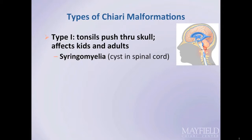Chiari malformation comes in a few different types. Type 1 is the most common and is found in both children and adults. Because the back of the skull is too small or deformed, crowding of the brain stem, cerebellum, and tonsils occurs. As the tonsils push out of the skull opening and pass through the foramen magnum, they press onto the spinal cord and block the flow of CSF.